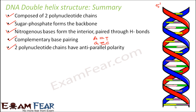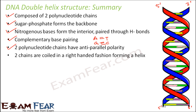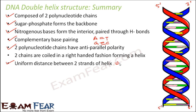The two polynucleotide chains have anti-parallel polarity: if one chain runs from 5' to 3', the other runs from 3' to 5'. The two chains are coiled in a right-handed fashion forming a helix. A uniform distance is maintained between the two strands, ensured by the fact that pairing always occurs between one purine and one pyrimidine — the size of a purine-pyrimidine pair always remains the same, keeping the inter-strand distance constant throughout the helix.